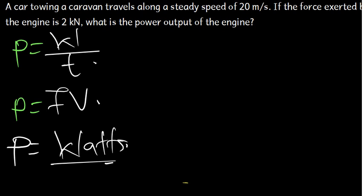Now, we have the question here which is saying: a car towing a caravan travels along a steady speed of 20 meters per second. If the force exerted by the engine is 2 kilonewtons, what is the power output of the engine?